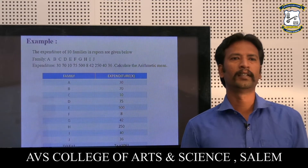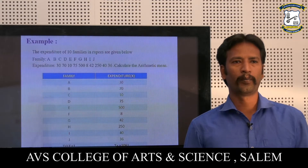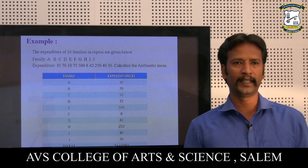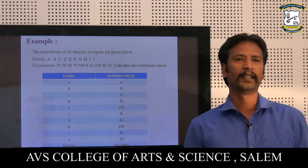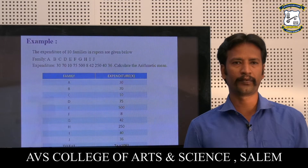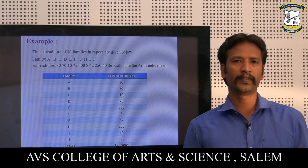For example, the first problem: the expenditure of 10 families in rupees are given below. The families are A, B, C, D, E, F, G, H, I, J. The expenditure values are 30, 70, 10, 75, 500, 8, 42, 250, 40, and 36.